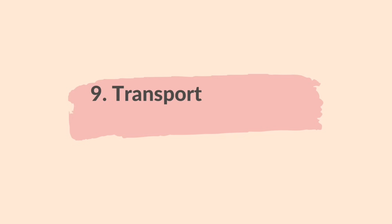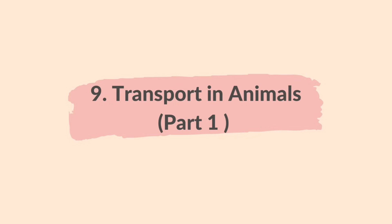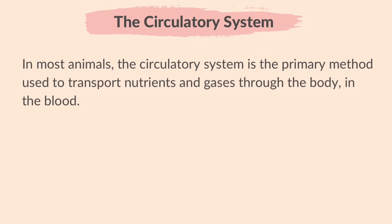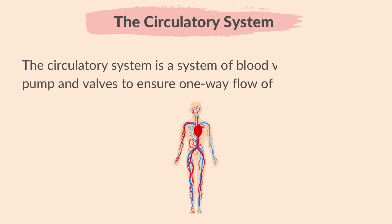This video summarizes part 1 of chapter 9, Transport in Animals. In most animals, the circulatory system is the primary method used to transport nutrients and gases through the body in the blood. The circulatory system is a system of blood vessels with a pump and valves to ensure one-way flow of blood.